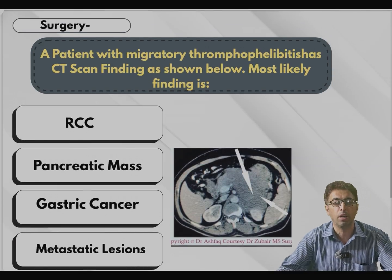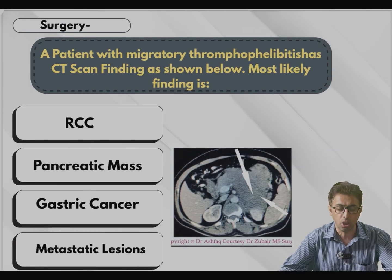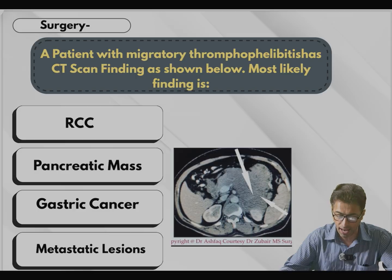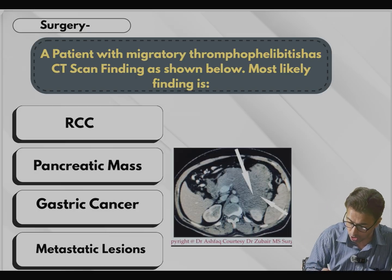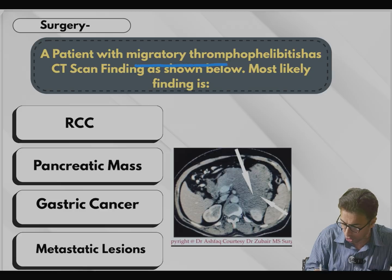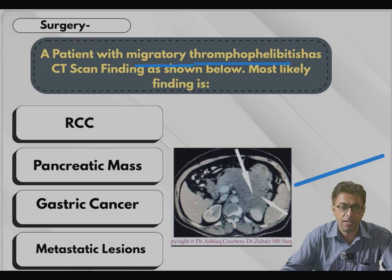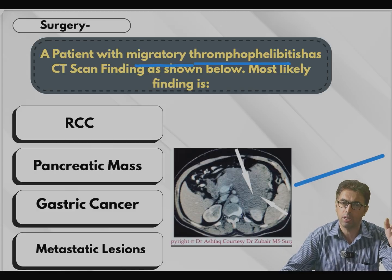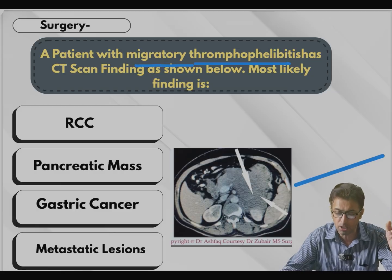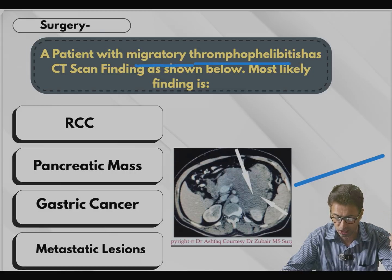Moving from medicine, we go to surgery. The question reads: a patient with migratory thrombophlebitis — very important — has CT scan findings as shown. Most likely finding is — so just two things: the image and migratory thrombophlebitis. Options: RCC (renal cell carcinoma), pancreatic mass, gastric mass, metastatic lesions.